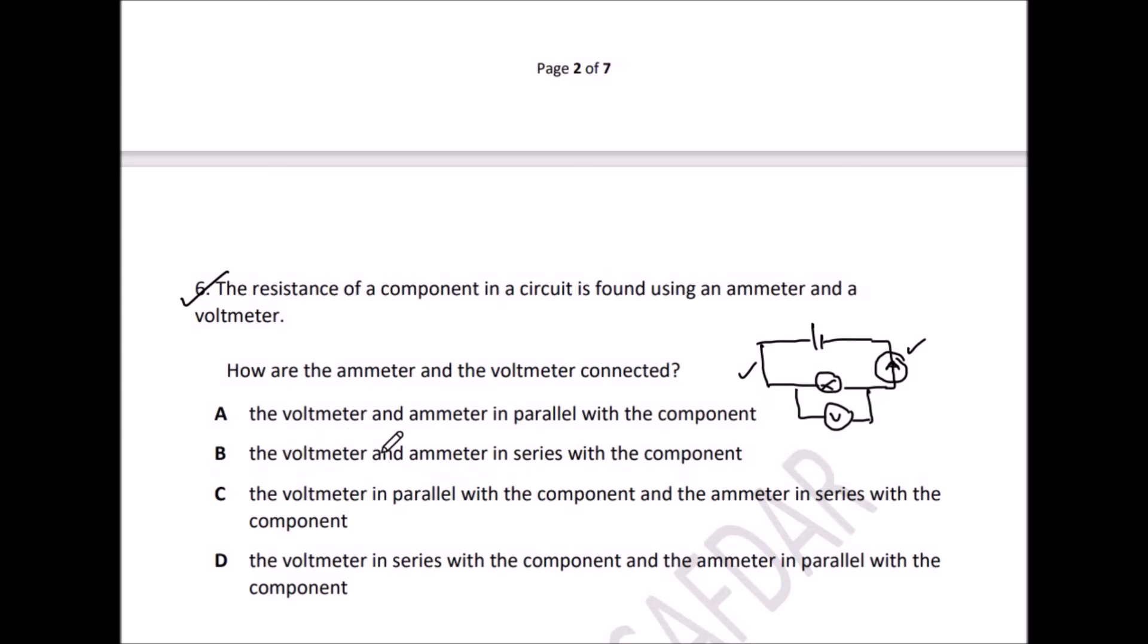Now check the option. Option A, the voltmeter and ammeter in parallel with the component, cross this one. The voltmeter and ammeter in series with the component, not possible. Both are in series. The voltmeter in parallel, true, with the component, and ammeter in series with the component, correct option. Check the last one. The voltmeter in series, not correct, and ammeter in parallel with the component, cross this one. Option C is the right answer here. The voltmeter in parallel with the component always, and the ammeter in series with the component.